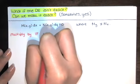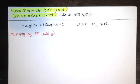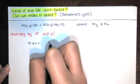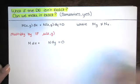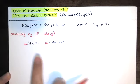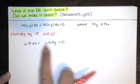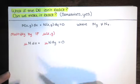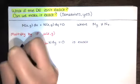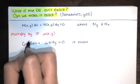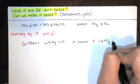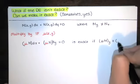So let's say you have a differential equation M(x,y) dx + N(x,y) dy = 0, and it turns out that the partial of M with respect to y is not equal to the partial of N with respect to x. Then this differential equation isn't exact, but we might be able to multiply by an integrating factor μ(x,y) to make it exact.